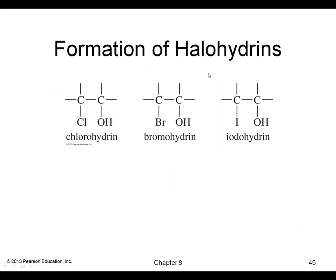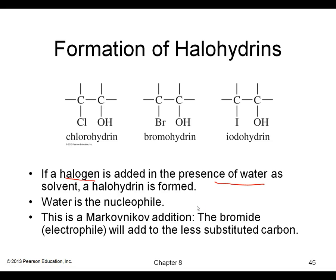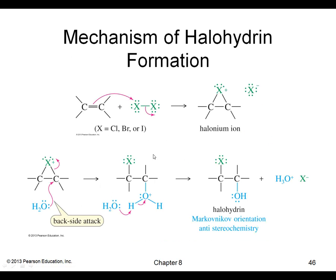The formation of halohydrins: here we have a chlorine or bromine or iodine vicinal to an OH. Halohydrins are formed when we use X2 and water simultaneously in the reaction. This gives Markovnikov addition where the bromine ends up on the less substituted carbon and the OH ends up on the more substituted carbon.